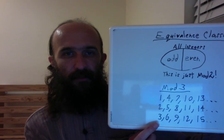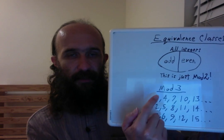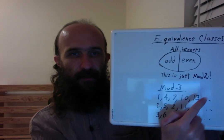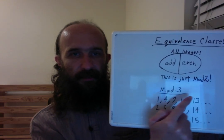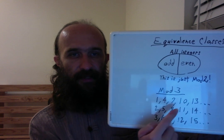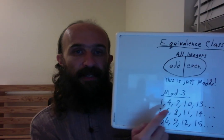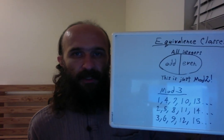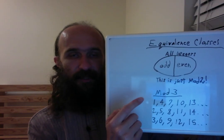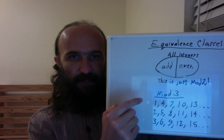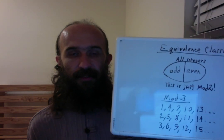At the bottom we have all the multiples of 3, so those are all equal mod 3. And then all the numbers in the top row, if we divide them by 3, we will get a remainder of 1. And in the second row, divide any of these numbers by 3, we will get a remainder of 2. And so we can do the same thing with mod 4, mod 5, mod 8 million, whatever we want. We just have that many rows and get that number of equivalence classes.